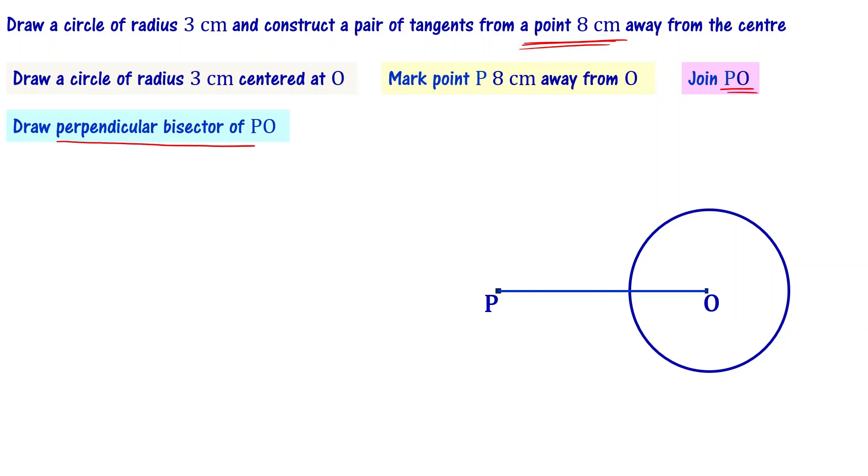To draw a perpendicular bisector of line PO, use the compass. Place compass needle at P, stretch it more than half, then draw two arcs as shown here. Next, place needle position at O and draw another pair of arcs that intersect, at this point and this point.